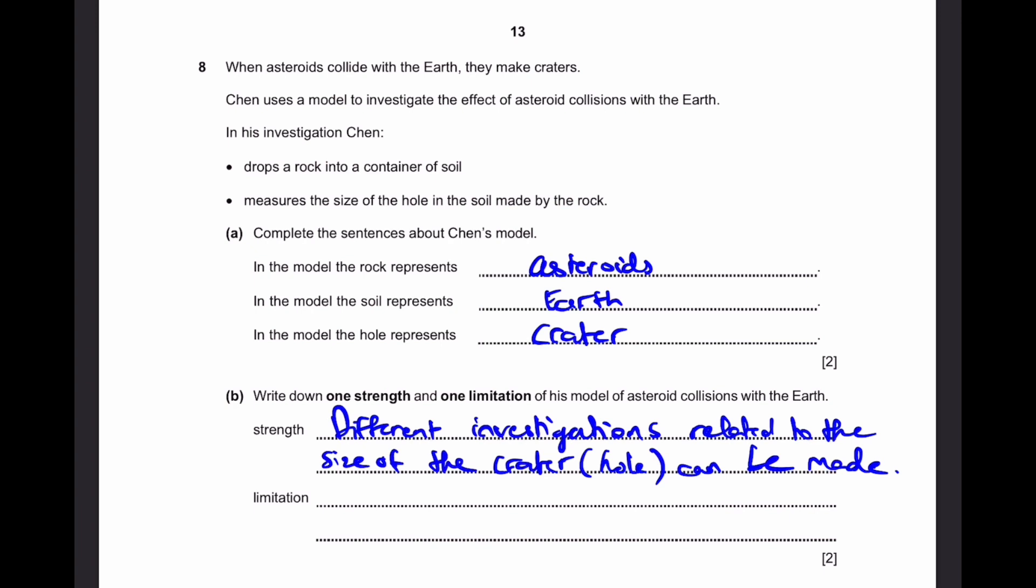Now the limitation is of course that a rock which we drop from my hand is going to have a speed of maybe a few meters per second or even less. But an asteroid colliding with Earth from outside the atmosphere, from the asteroid belt for example, is going to have unimaginable speeds compared to the rock. So we cannot attain the actual speed at which asteroids collide with the Earth.